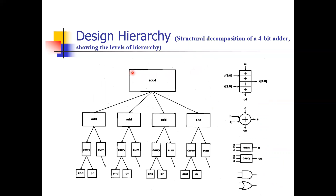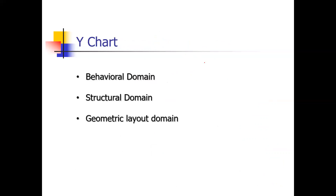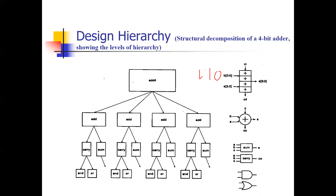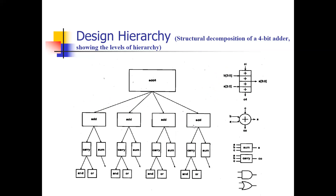Next is design hierarchy. Suppose we are designing a four-bit full adder — adding two four-bit numbers. It looks simple but is somewhat complex to design. A four-bit adder uses four full adders, each with carry and sum outputs. The carry and sum equations use AND gates and OR gates. This is decomposition — a top-down approach showing the structural decomposition of a four-bit adder: main block divided into modules, modules divided into cells, cells divided into transistors.